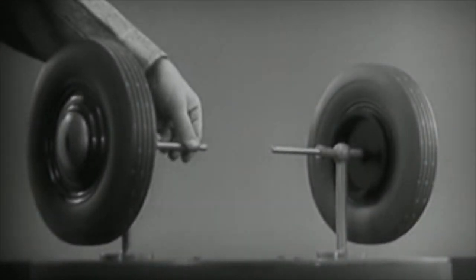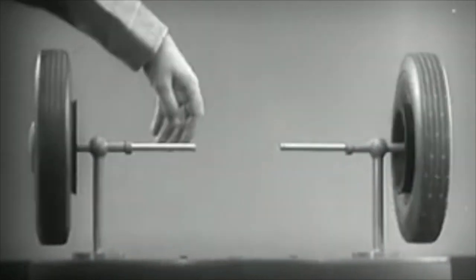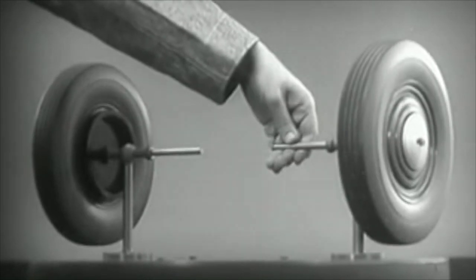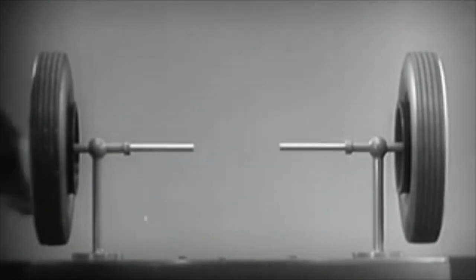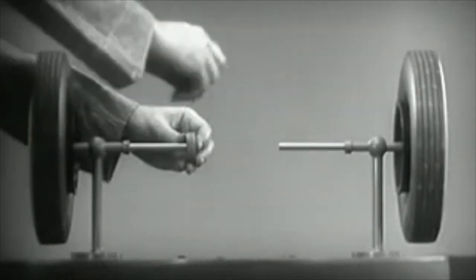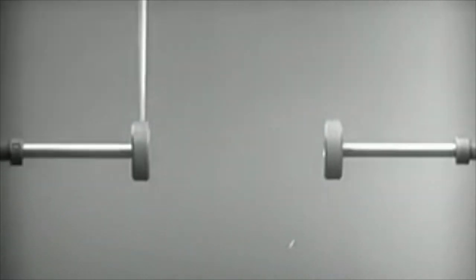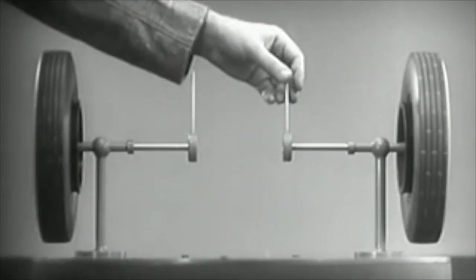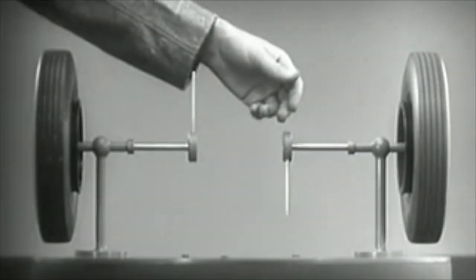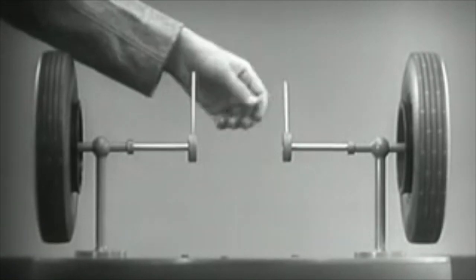These two wheels are mounted on separate axles and supported by a frame so that they can revolve freely at different speeds. Let's fasten a spoke on the inner end of each axle so that by turning the spokes we can turn each wheel separately.